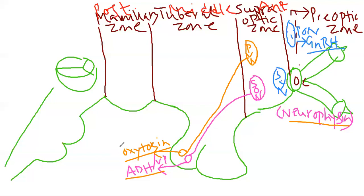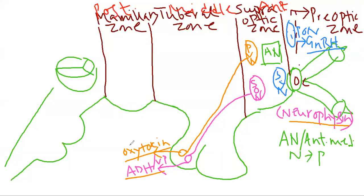So oxytocin and ADH are under control of the supraoptic nucleus and the paraventricular nucleus, both within the supraoptic zone. The third important nucleus in the supraoptic zone is the anterior nucleus of the hypothalamus, also known as the anteromedial nucleus. This anterior nucleus of the hypothalamus is very much concerned with the parasympathetic outflow, which originates from the anteromedial part of the hypothalamus.